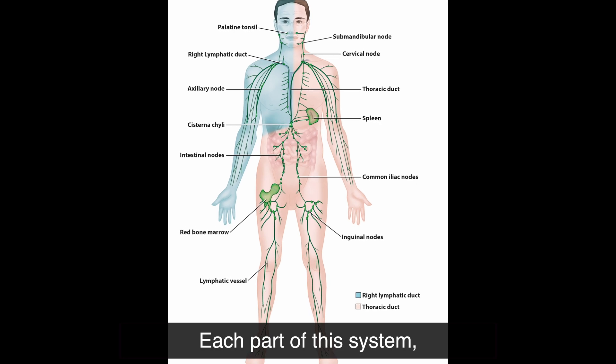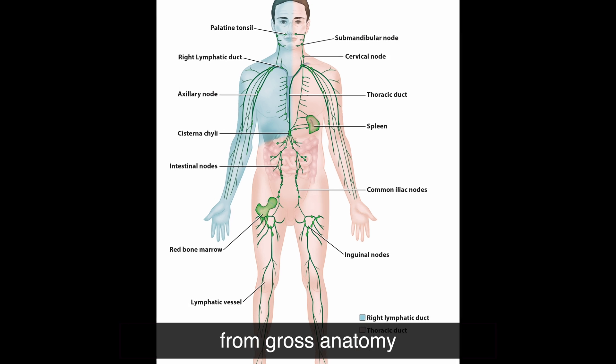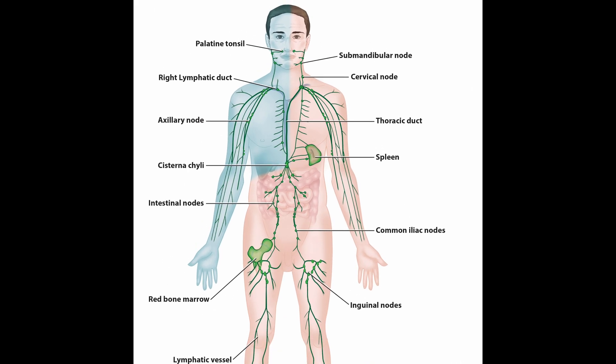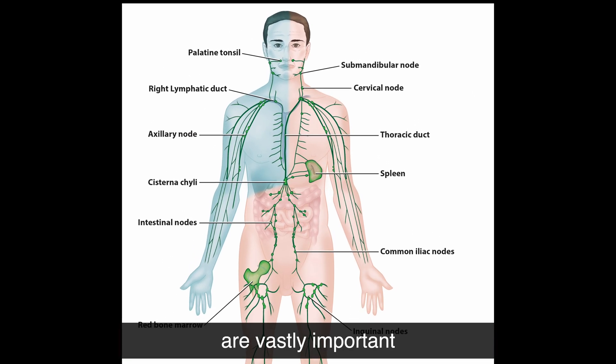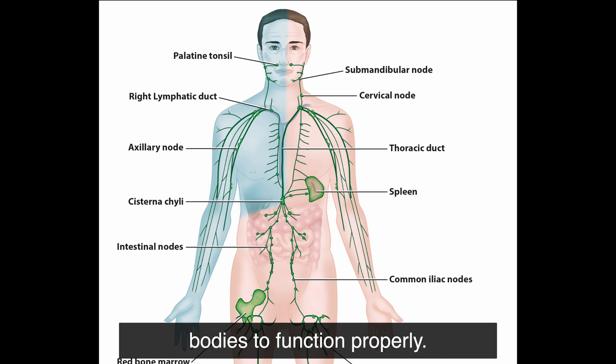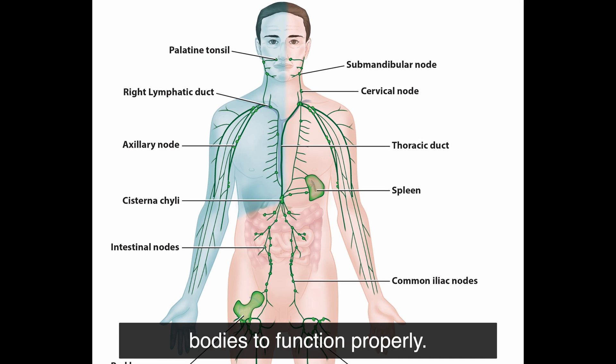Each part of this system, from gross anatomy to the smallest cells, is vastly important in allowing the rest of our bodies to function properly.